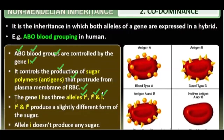Small i means blood group O — that is the recessive most. IA and IB produce a slightly different form of the sugar, and because of that, our blood groups are expressed. Now, look at the genotypes. Blood group A — the genotype is IA IA, and IA can be small i. IA is dominant, IB is also dominant, small i is recessive.